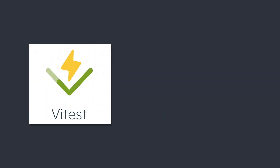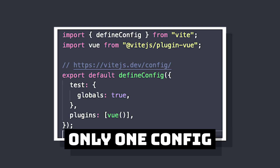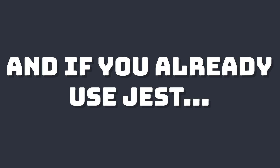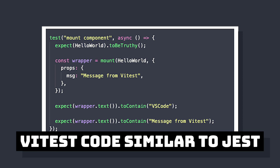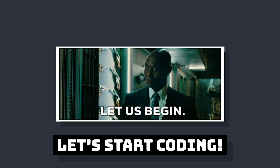Since Vitest builds off Vite, we can share the plugins and configuration that we define in our Vite config between both our apps and our tests, meaning there's just one pipeline to maintain. And if your app is already using Jest, Vitest is compatible with most of the Jest API and libraries, meaning that it can be a simple drop-in replacement that you can try for yourself.